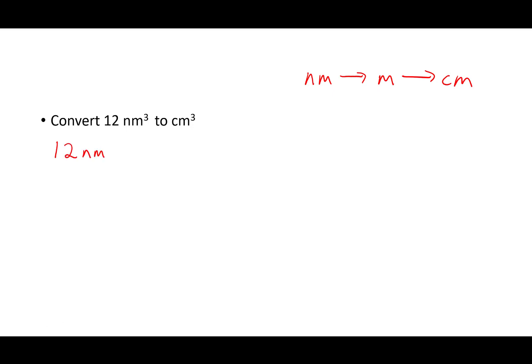So let's start with our value: 12 nanometers to the third. We need to get that into meters cubed first. I know that there are 10 to the 9 nanometers in one meter. So my conversion factor — if I want to cancel out nanometers cubed and be left with meters cubed — I need nanometers down below and meters up top. I know there are 10 to the 9 nanometers in a meter. That's my linear conversion factor, but I need to cube it in order to cancel out all three of these nanometer units. So let's cube that.